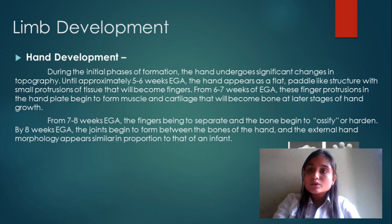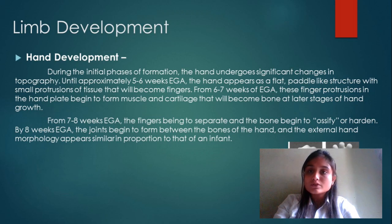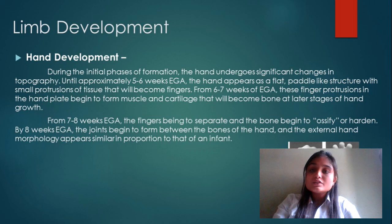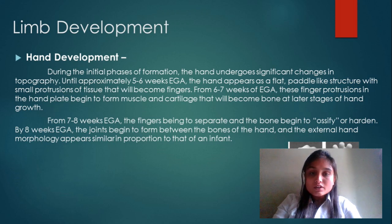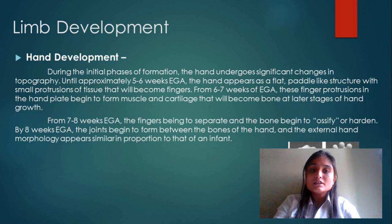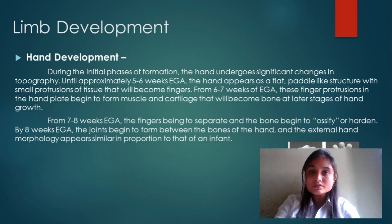Limb and hand development: during the initial phases of formation, the hand undergoes significant changes in topography. Until approximately 5 to 6 weeks EGA, the hand appears as a flat, paddle-like structure with small protrusions of tissue that will become fingers. From 6 to 7 weeks EGA, these finger protrusions begin to form muscles and cartilage that will become bone at a later stage.